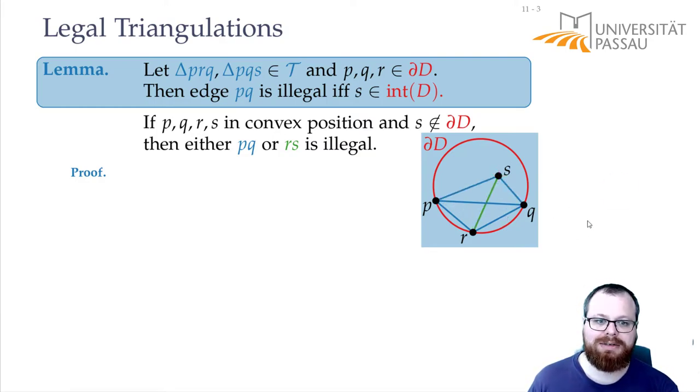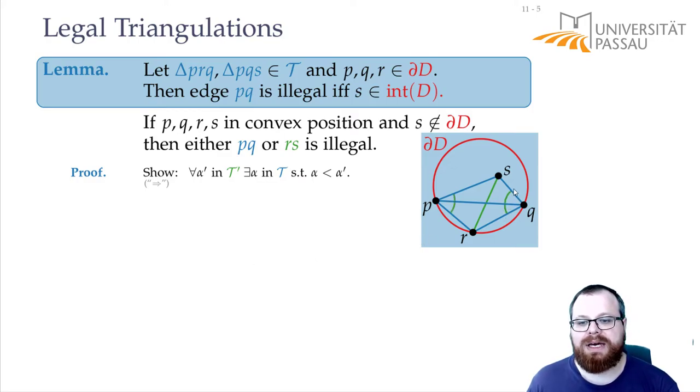To prove that this edge is illegal, we can directly use the Thales++. We want to show that for all the angles in the triangulation after the flip, there is an angle in the original triangulation that is smaller. Let's try to do that. We have in the new triangulation these two angles. For both of them, we have these smaller ones here.